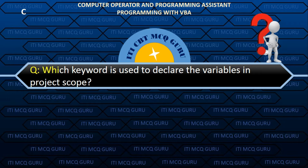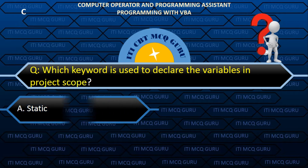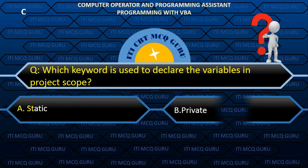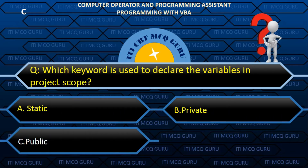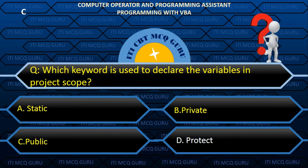Which keyword is used to declare variables in project scope? Answer: C. PUBLIC.